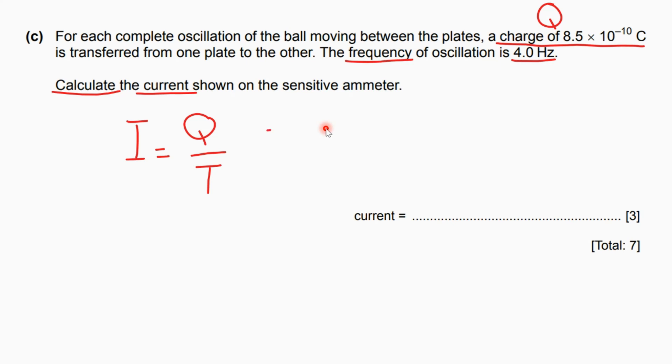The time taken equals 1 over frequency. It's inversely proportional as a relation between the time taken and the frequency, which is 1 over f. To get the time taken, 1 divided by 4 gives us 0.25 seconds.